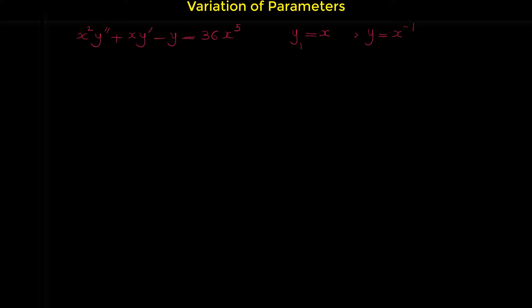First, we want to prove that these are the solutions of the corresponding homogeneous differential equation. Note that the corresponding homogeneous differential equation is x squared y double prime plus x y prime minus y equals 0. We set the left side of the equation equal to 0. This is the homogeneous differential equation, and we have to plug in each of these functions — it should make this equal 0.